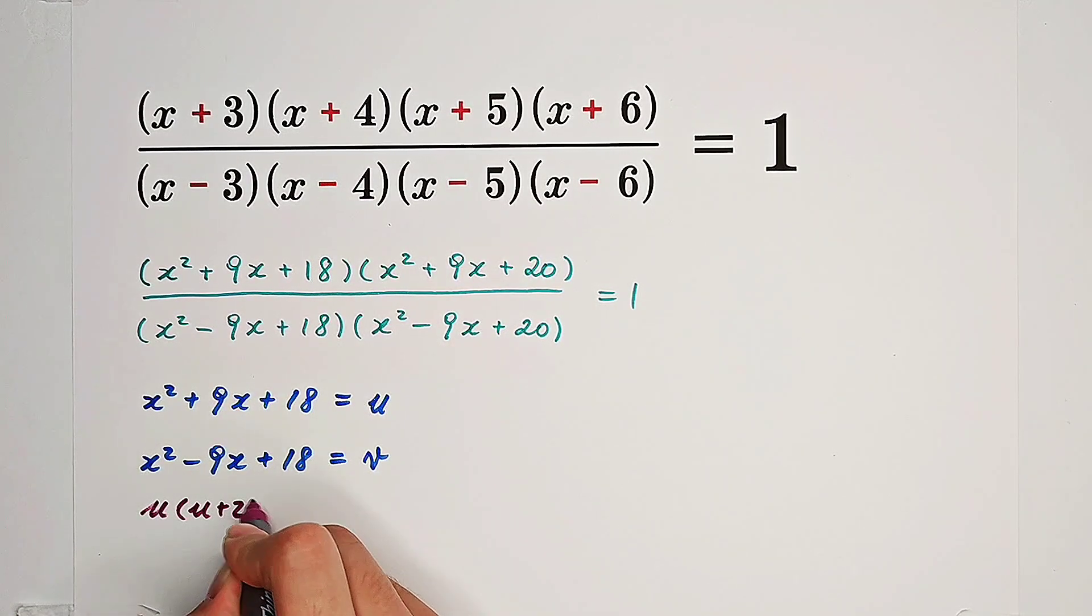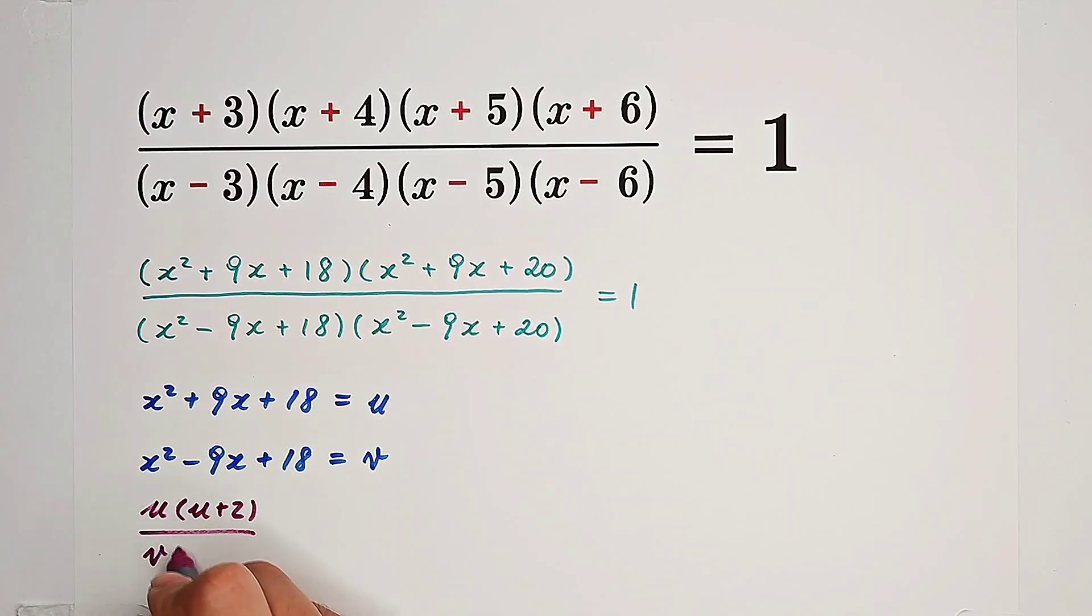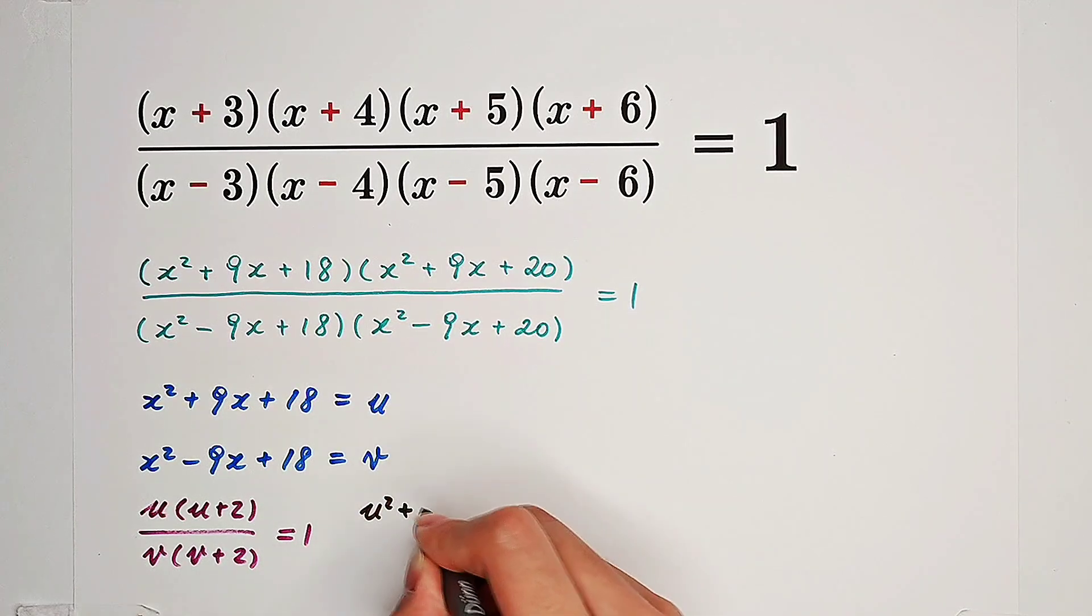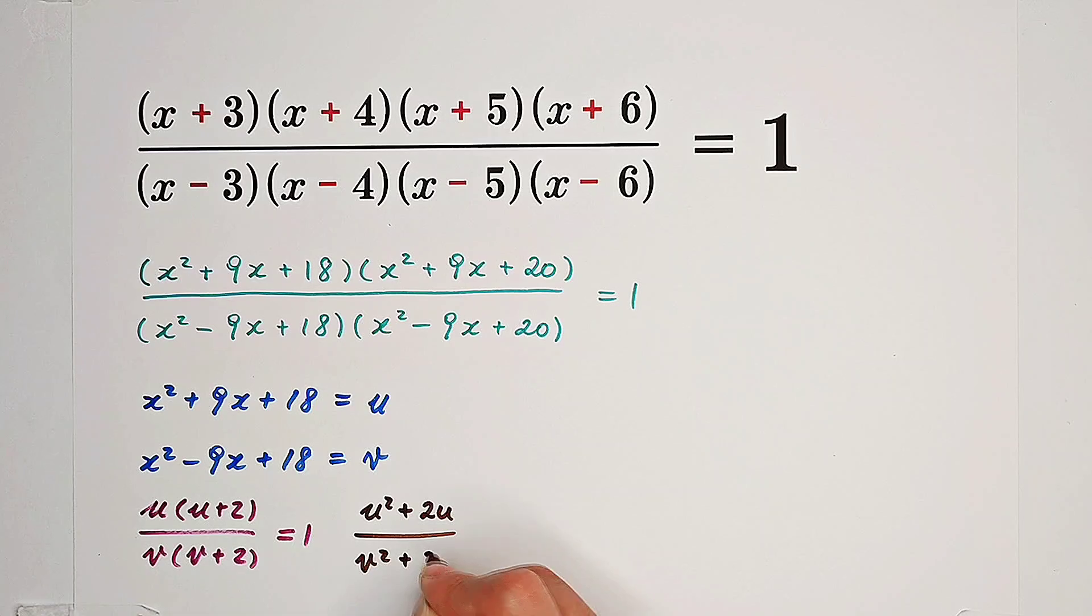So we're going to get this equation: u times u plus 2 over v times v plus 2 equals 1. u squared plus 2u over v squared plus 2v equals 1.